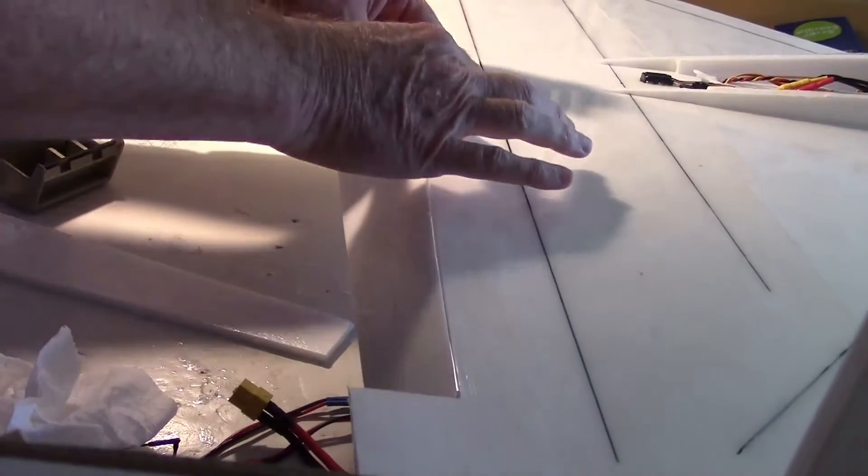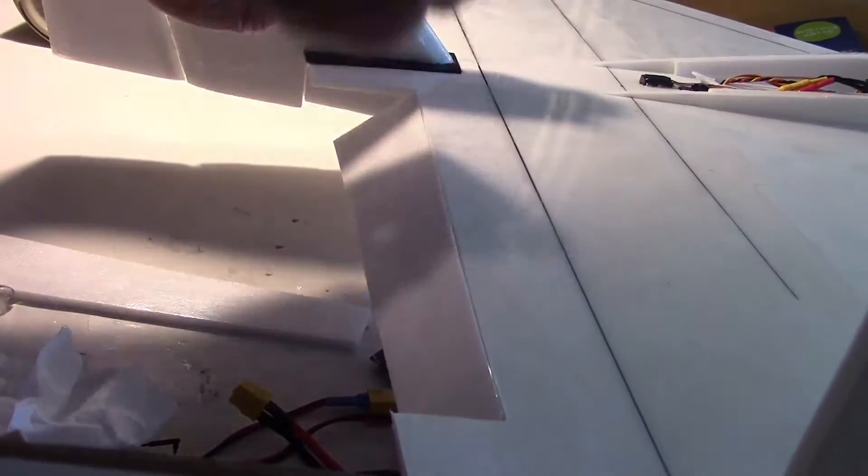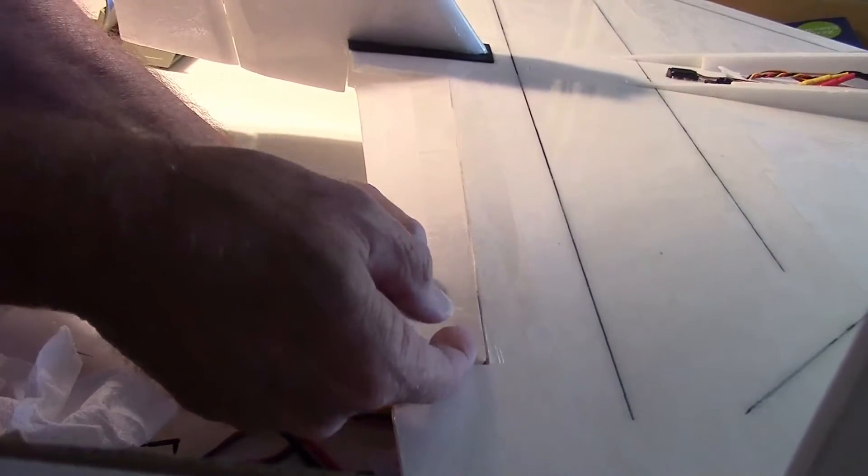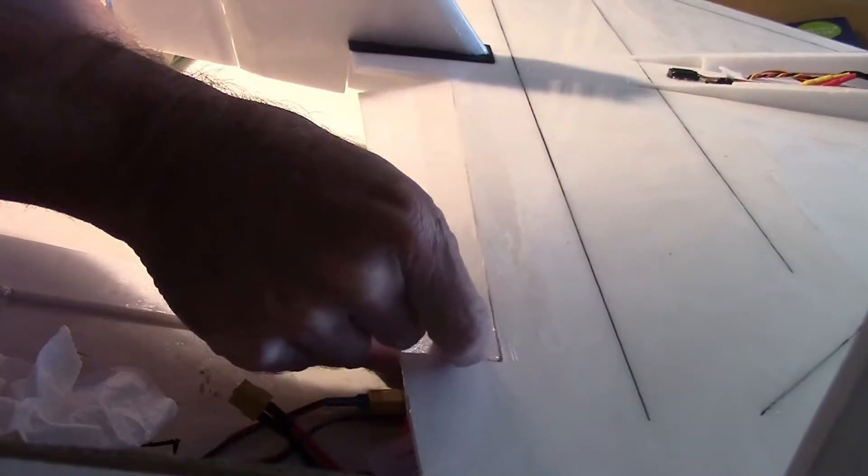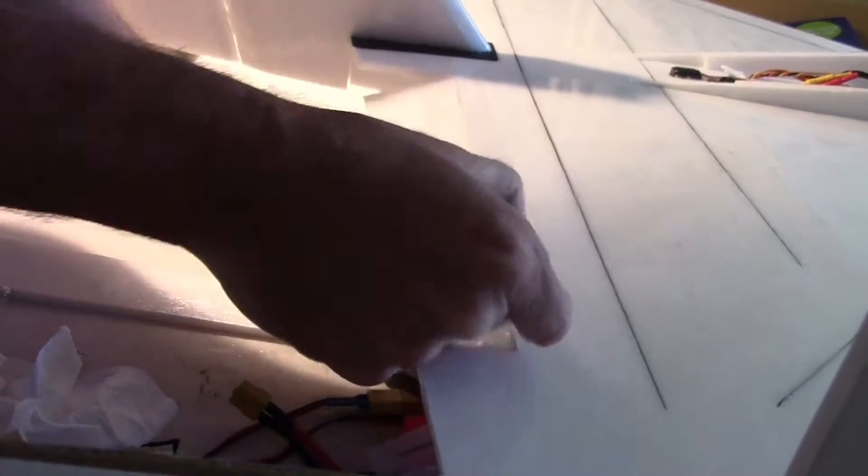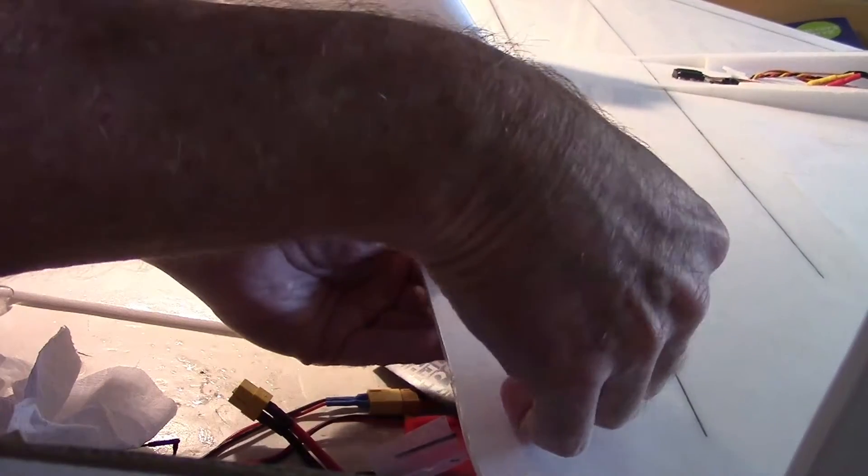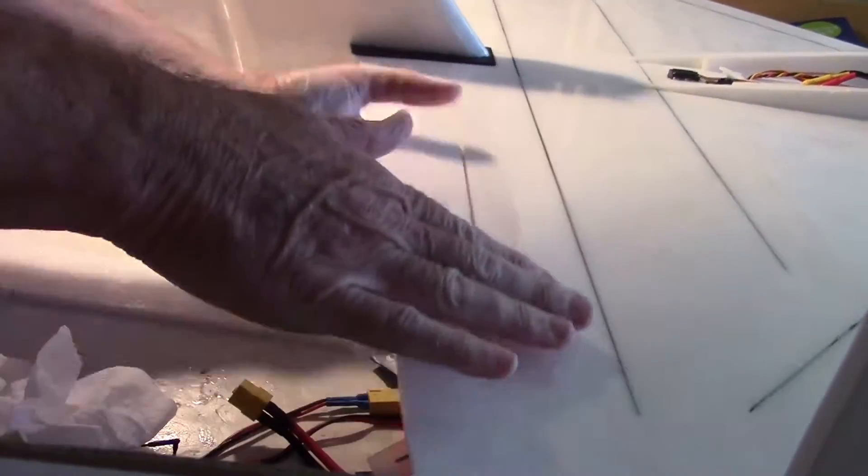Okay, now we can put a piece all the way across here. That should be about it, just enough to do the job. Got a little bit of wrinkle there. I think I can pull it out though. The lamination gives me a little bit of leeway to work with it.